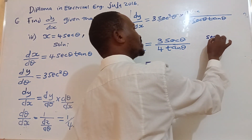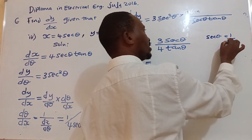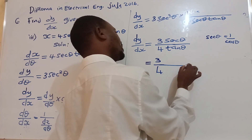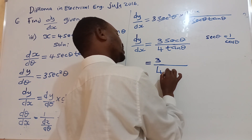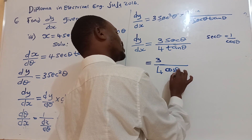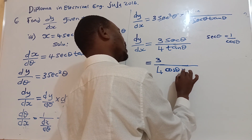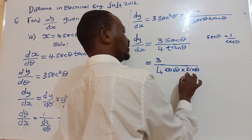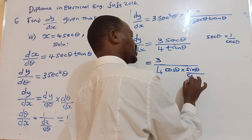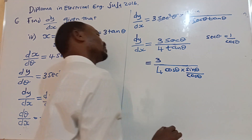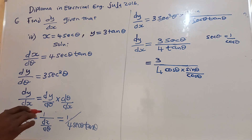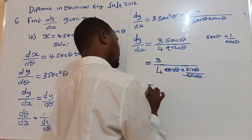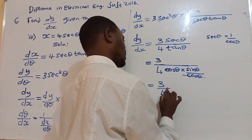Remember, sec theta is equal to 1 over cos theta. So this becomes 3 over 4 times cos theta over tan theta. And tan theta is sin theta over cos theta, so that now cos theta cancels with cos theta. What you have is 3 over 4 sin theta.